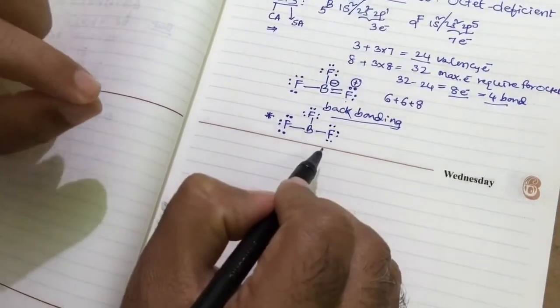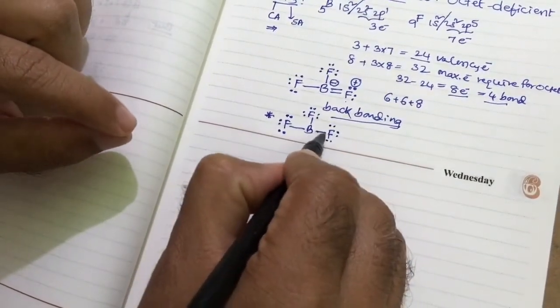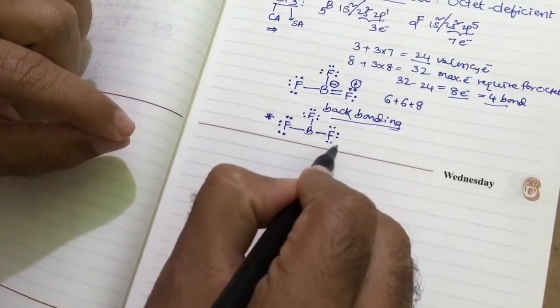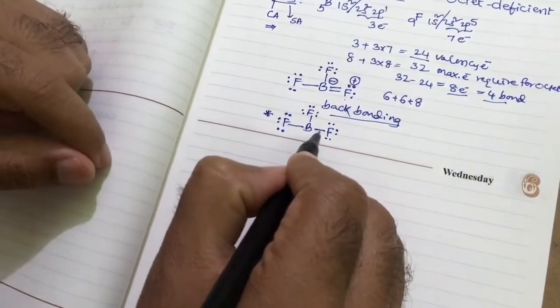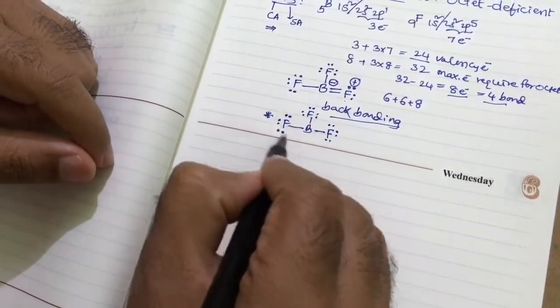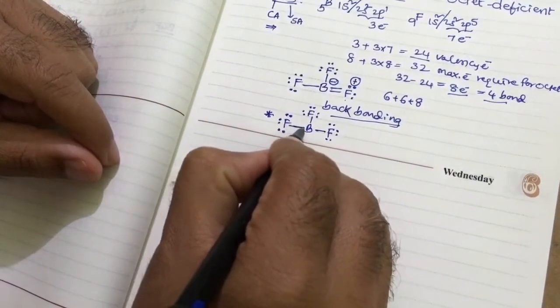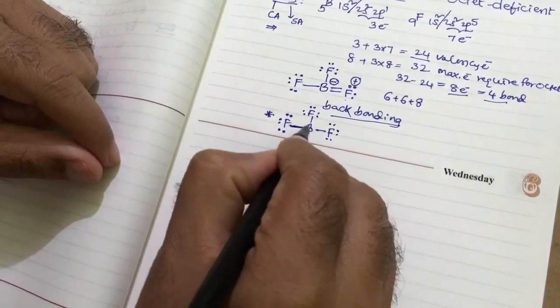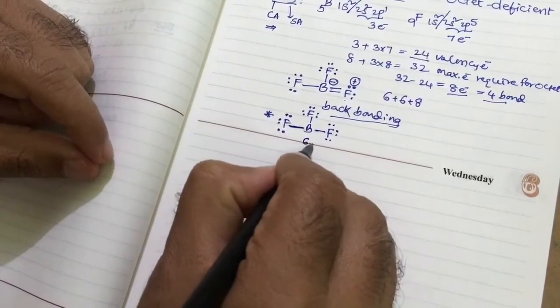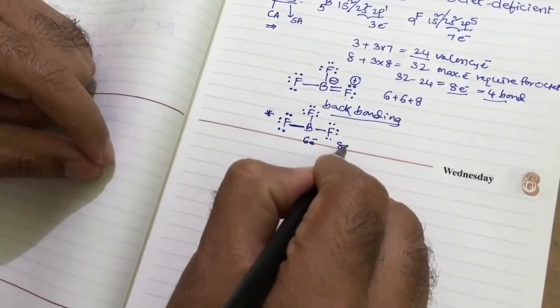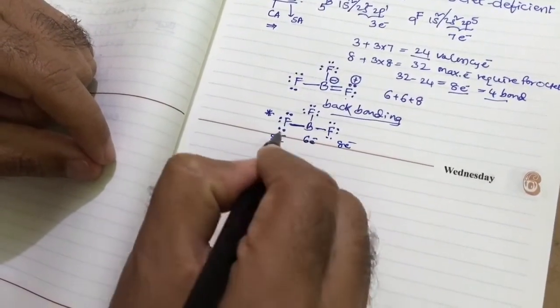Then each fluorine gets the octet here. 1 bond means 2 electrons and 3 lone pairs. 3 lone pairs, 3 times 2, 6 and this 2 electrons. 8 electrons at each fluorine. Now around the boron, 3 bonds, it means 6 electrons at the boron, 8 electrons at each fluorine atom.